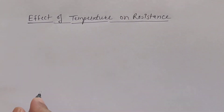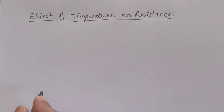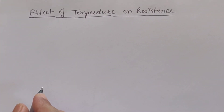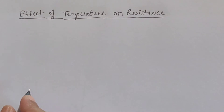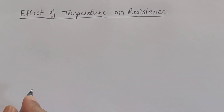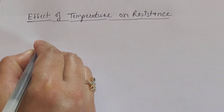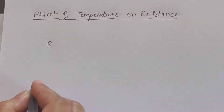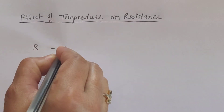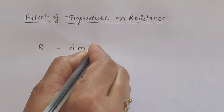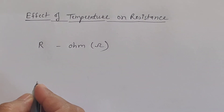Hello friends, today we are going to discuss the effect of temperature on resistance. Before that, we are going to discuss resistance and the factors on which resistance depends. We know that resistance is denoted by R, it is opposition to the flow of current, and it is always measured in ohms.